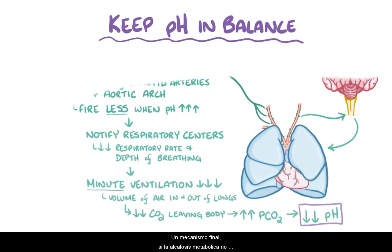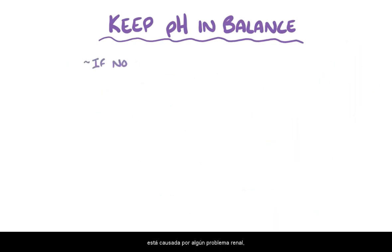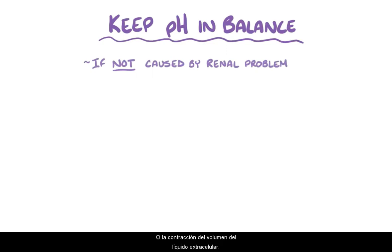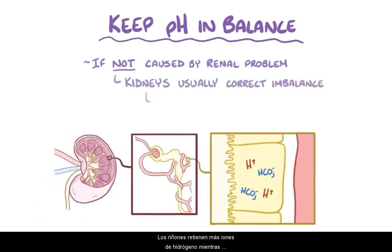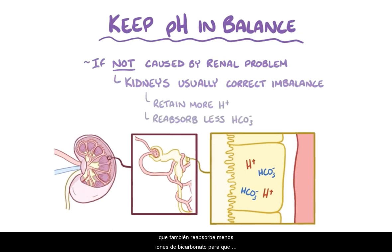A final mechanism is that if metabolic alkalosis isn't caused by some renal problem like the use of diuretics or extracellular fluid volume contraction, then several days later the kidneys usually correct the imbalance. The kidneys retain more hydrogen ions while also reabsorbing less bicarbonate ions, so that it's more easily dumped into the urine.